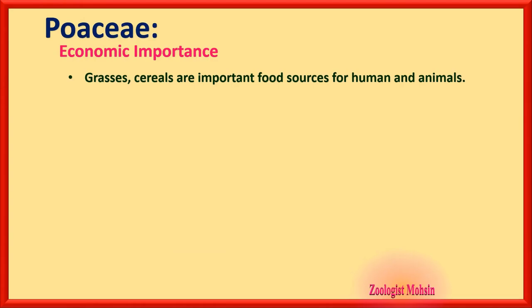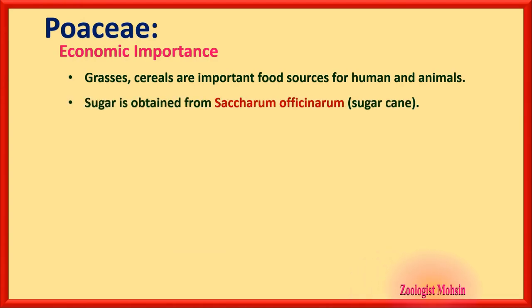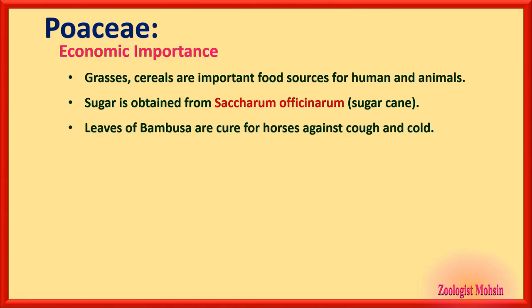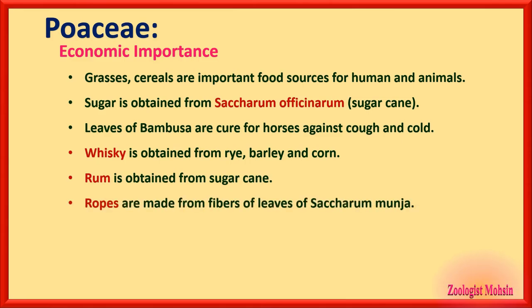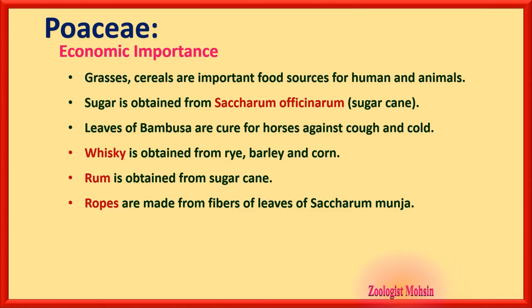Poaceae economic importance: grassy cereals are important food sources for humans and animals. Sugar is obtained from Saccharum officinarum (sugarcane) — an important scientific name to remember. Leaves of Bambusa are used as a cure for horses against cough and cold. Whisky is obtained from rye, barley, and corn, while rum is obtained from sugarcane. Ropes are made from fibers of Saccharum. Remember to memorize only those scientific names where both the common name and scientific name are given in the text, as either may be asked in the options.